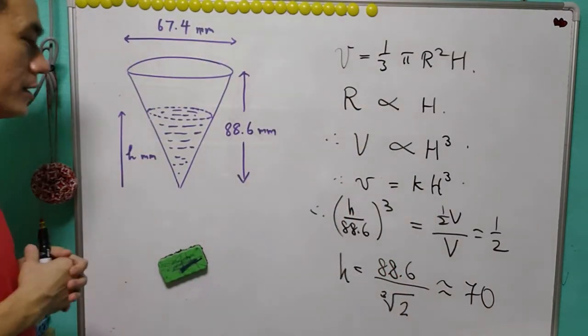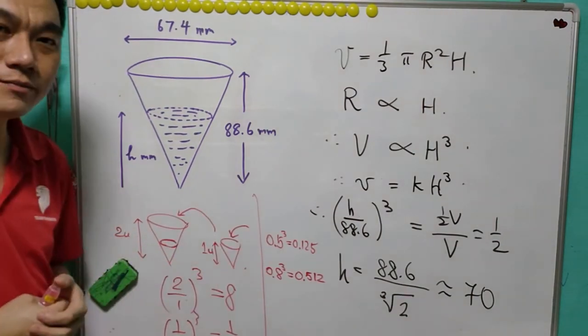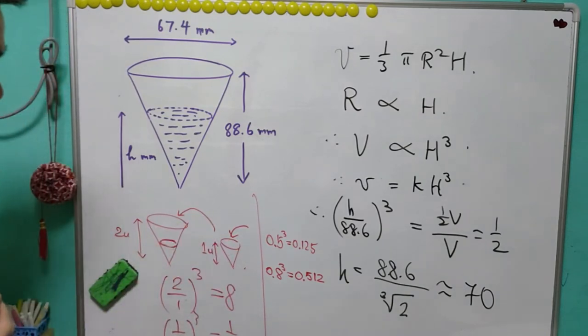And 70 is the closest integer for h. So here is my presentation. And for now let's look at other people's solution.